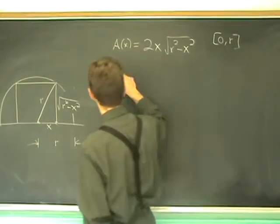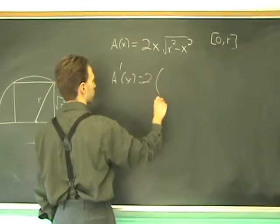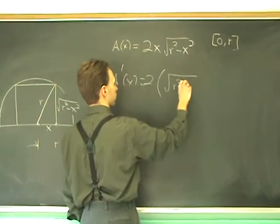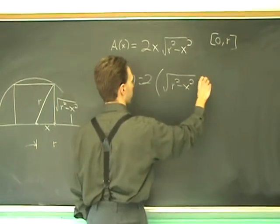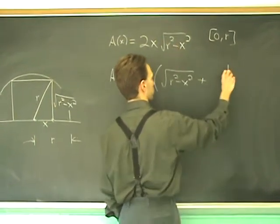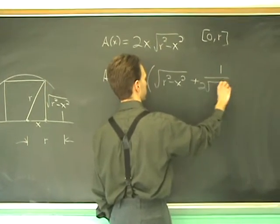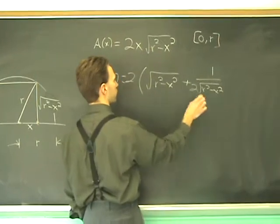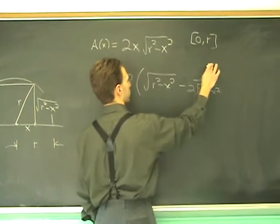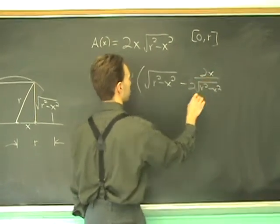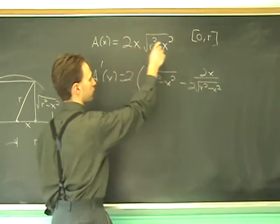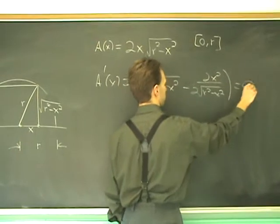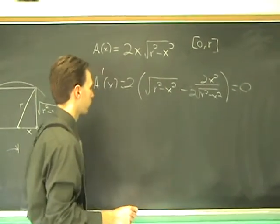So, A prime of X equals 2 times, we need the Product rule, F prime G. R squared minus X squared. Plus, G prime, which is 1 over 2 square roots of R squared, minus X squared, times minus 2X, so minus 2X, times F again. And critical numbers, set that equal to 0. And you see what we come up with.